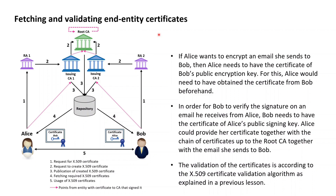The issuing CA1 then indeed issued a certificate to Alice for a key pair that can be used to create digital signatures, and the issuing CA2 issued a certificate to Bob for a key pair that can be used to encrypt other cryptographic keys. With these certificates issued, the stage is set for various applications, but the application we are interested in for this course is the implementation of a sign-then-encrypt approach to secure emails.